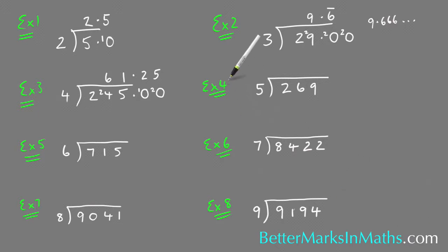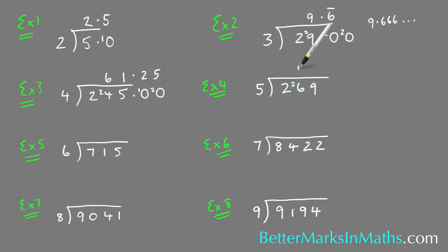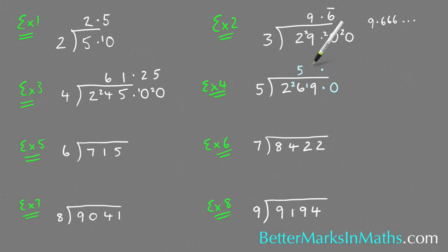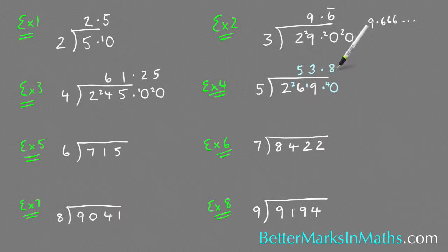Example four: how many fives in 269? How many fives in two? None, so carry that two. How many fives in 26? There's five with one left over. I'm going to add a zero and put a point up there as well. How many fives in 19? There's three — three fives are 15, so there's a remainder of four. How many fives in 40? The answer is eight with no remainder. So five into 269 — as a decimal the answer is 53.8.